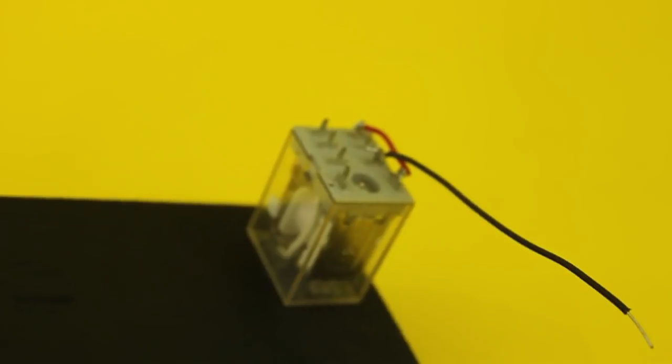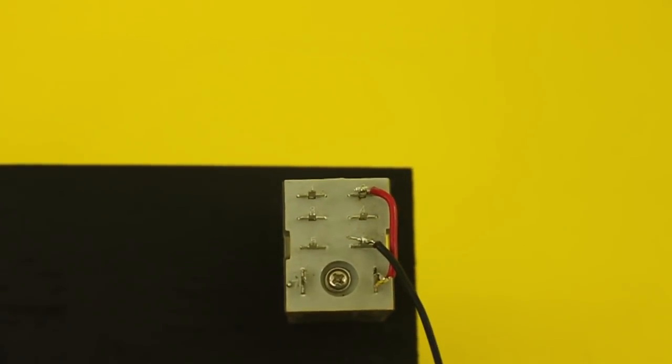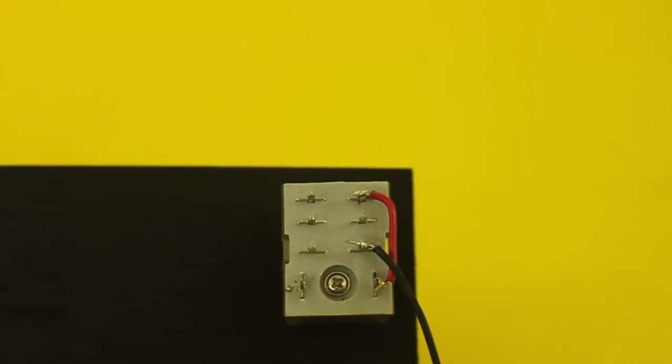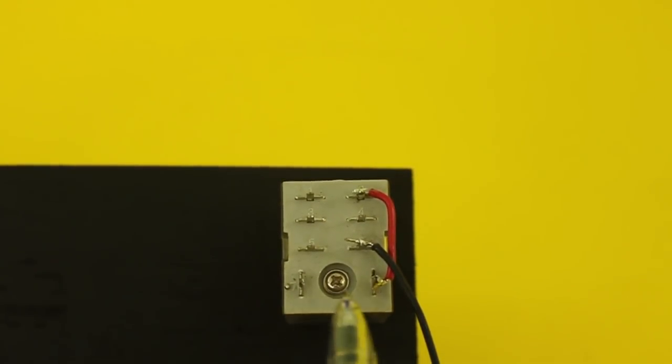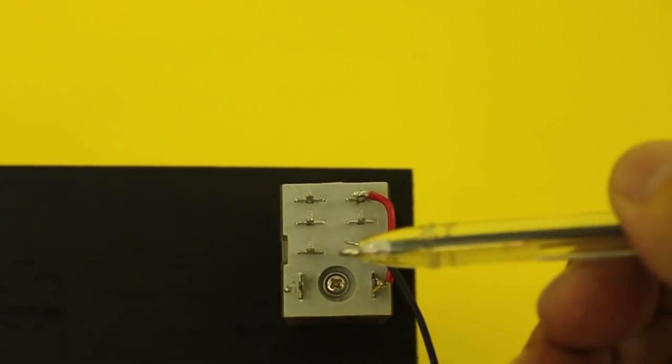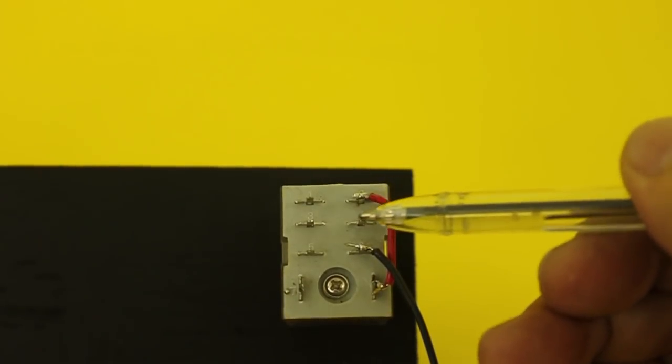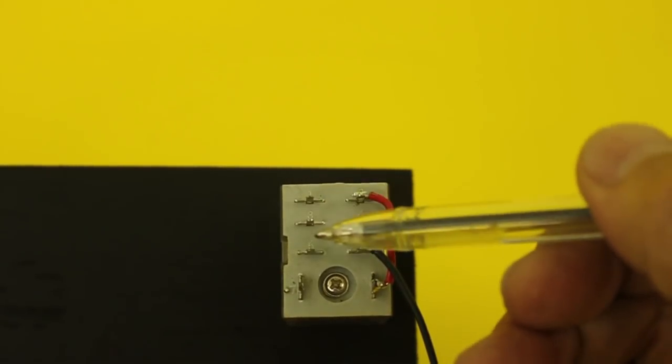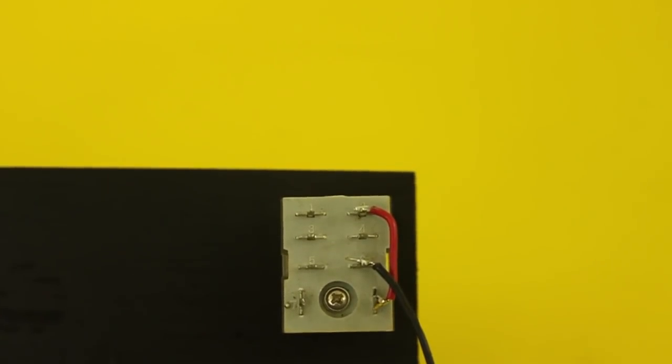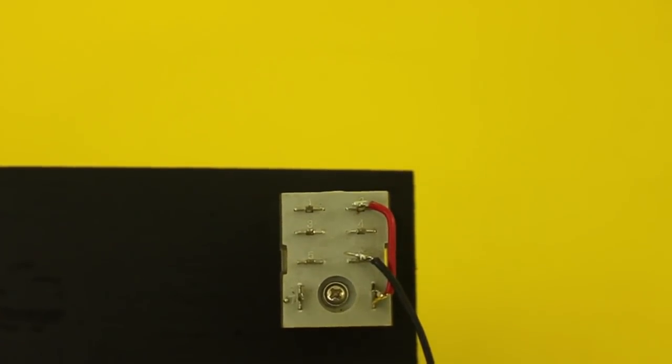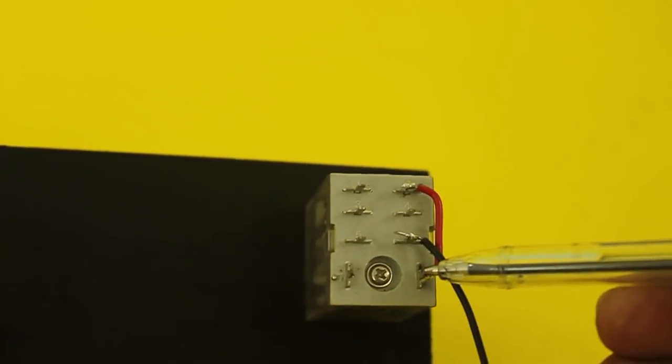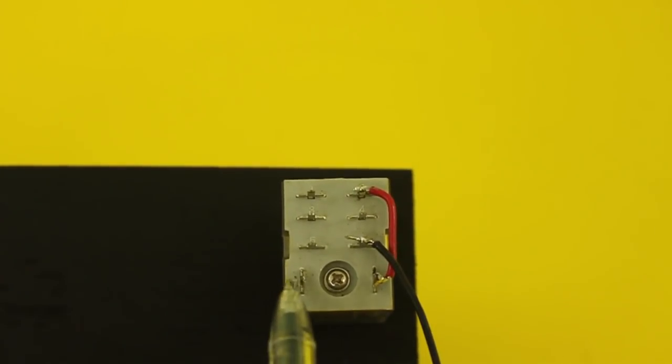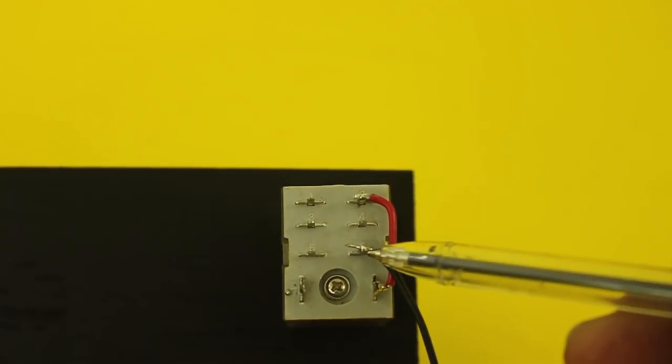Here we have a relay that is connected as an oscillator. It is a double pole, double throw relay, which means that we have two sets of contacts. These two contacts are the contacts of the coil, and we have the common, normally closed, and normally open. The same in the other set. In order to work as an oscillator, we connect the normally closed contact with one contact of the coil and we apply voltage to the other side of the coil and to the common.